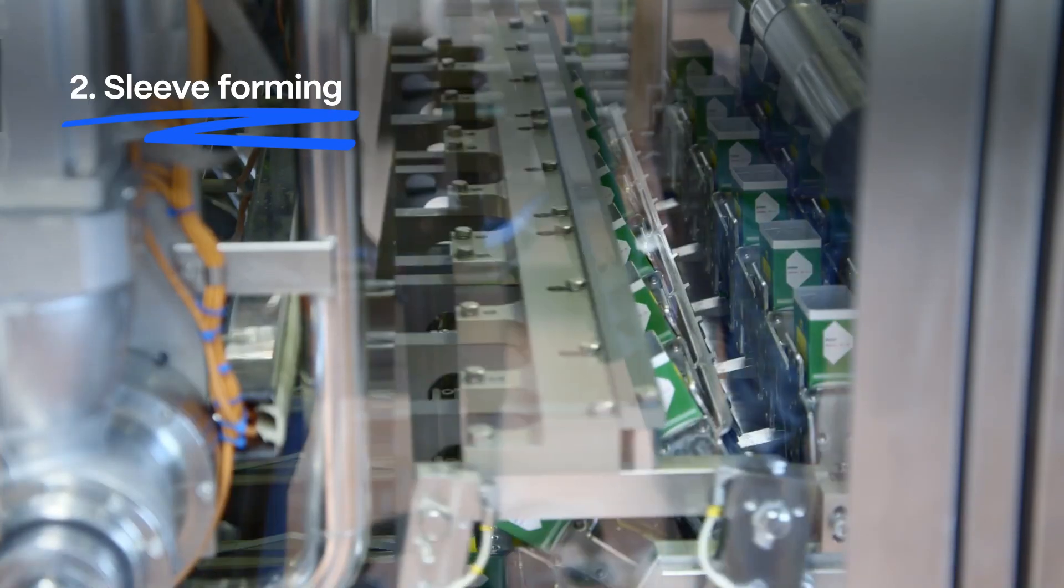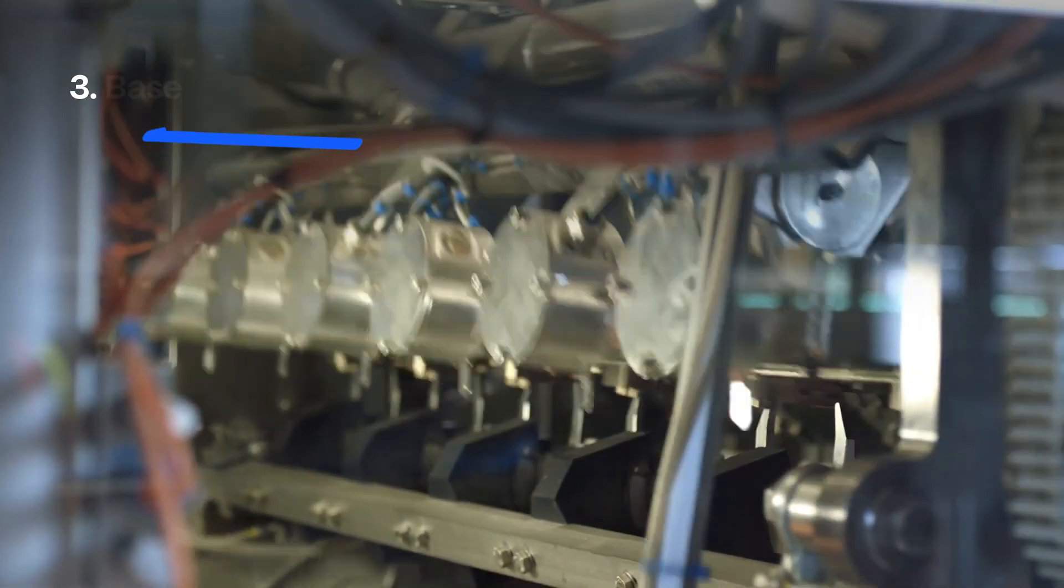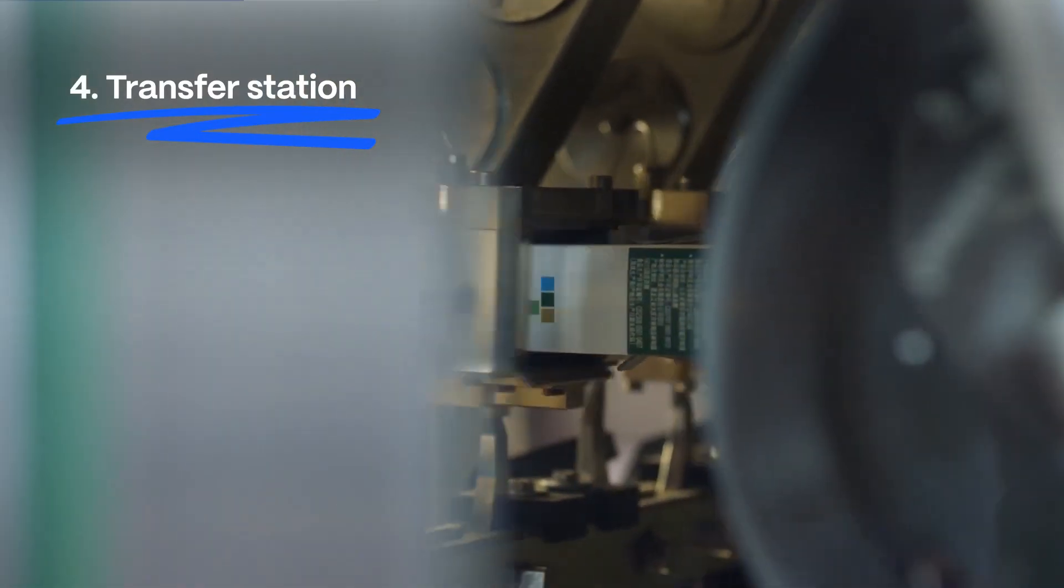On the mandrel wheel, the base of each carton sleeve is folded, pressed and sealed. The cartons are then transferred from the mandrel to the pocket chain.